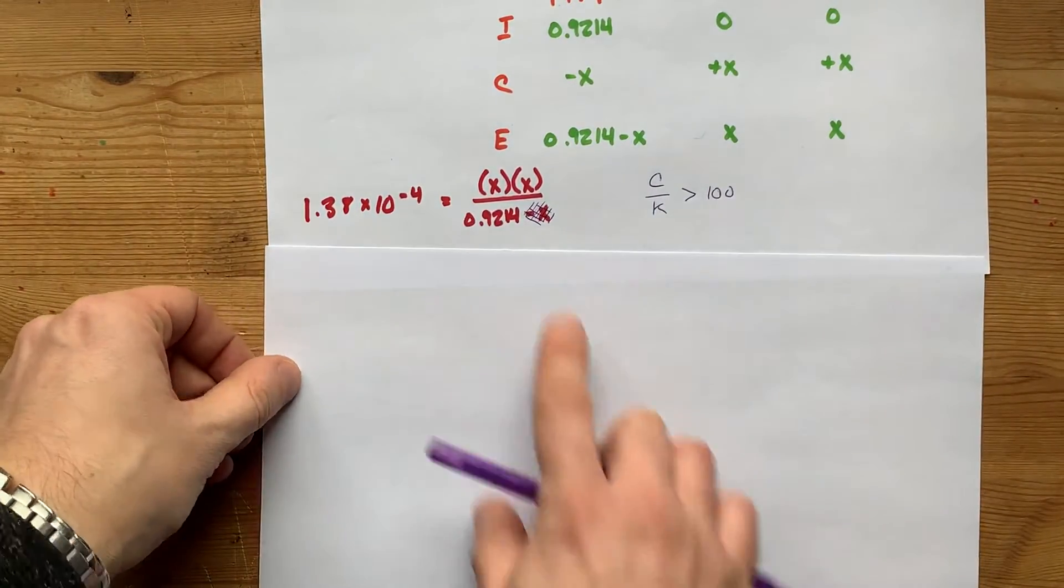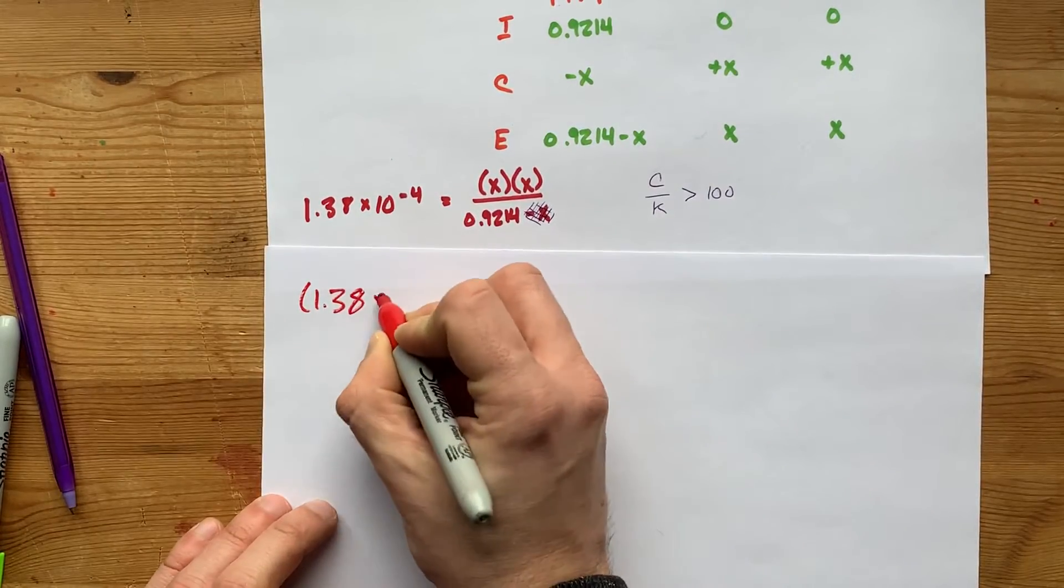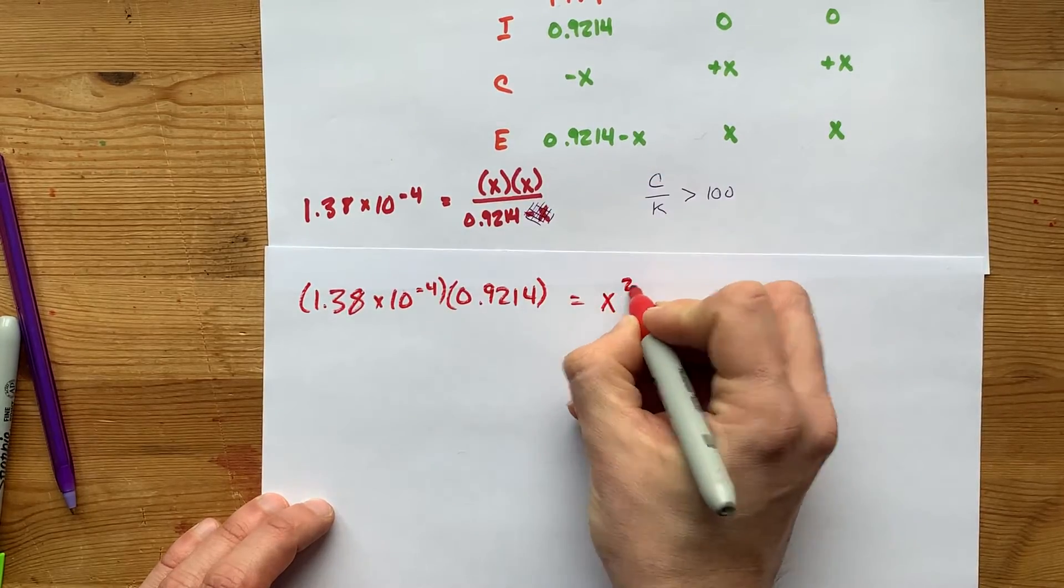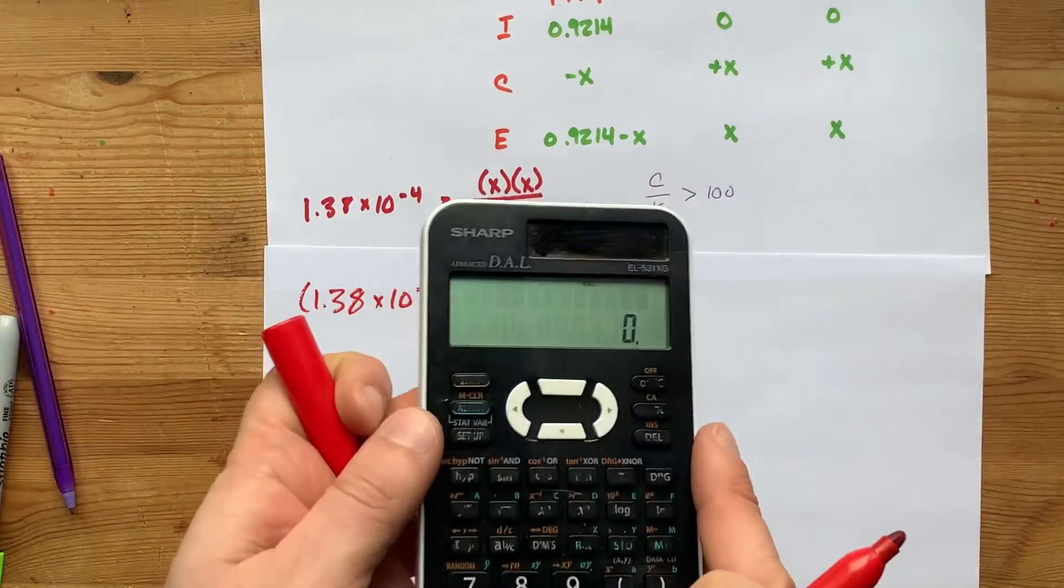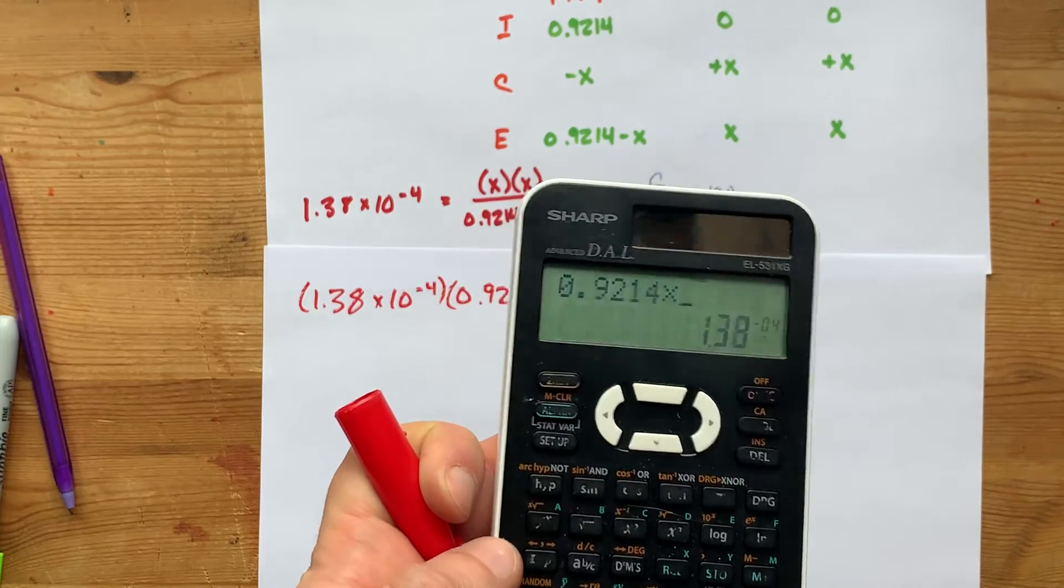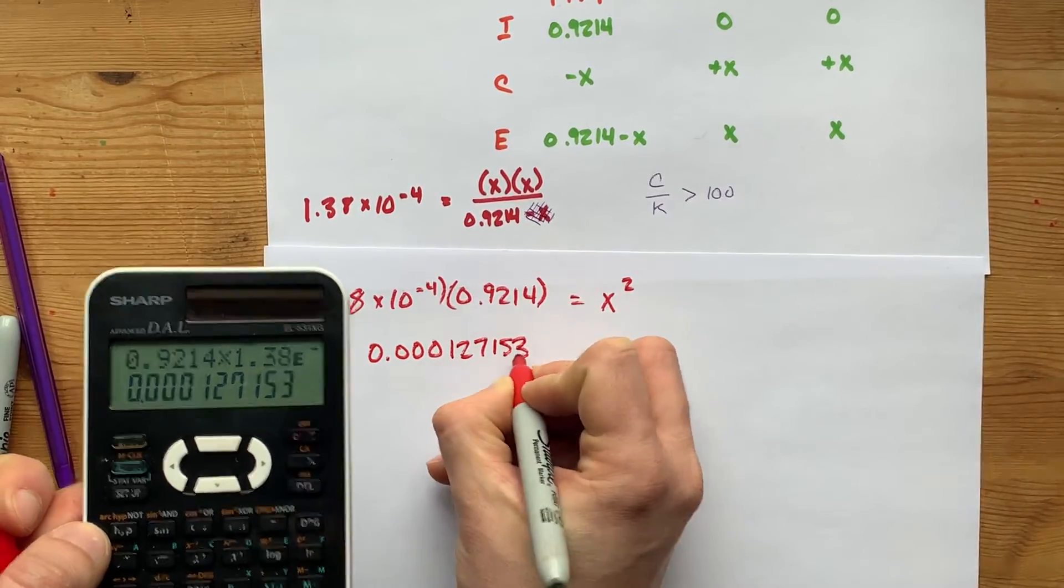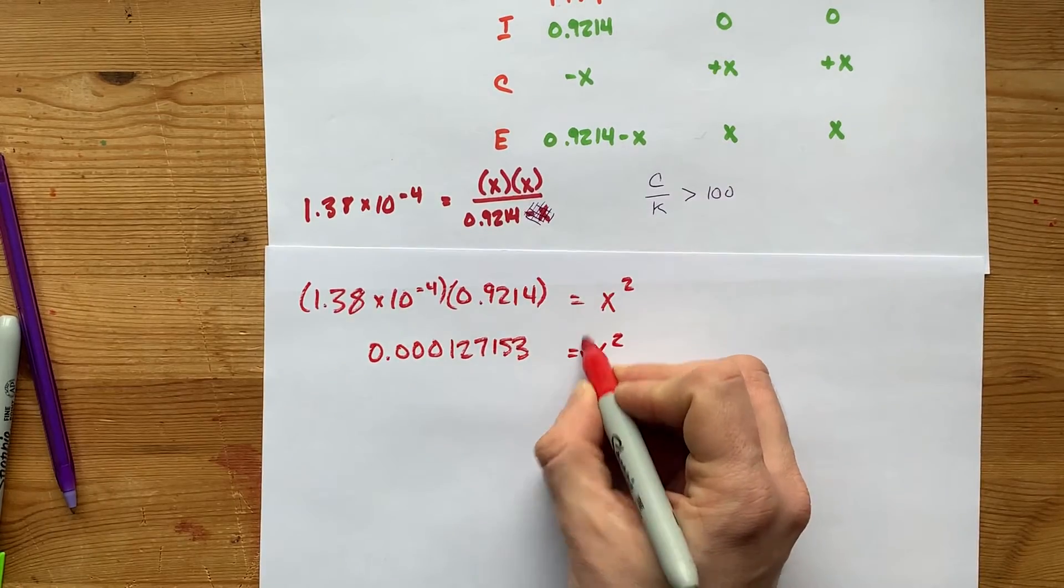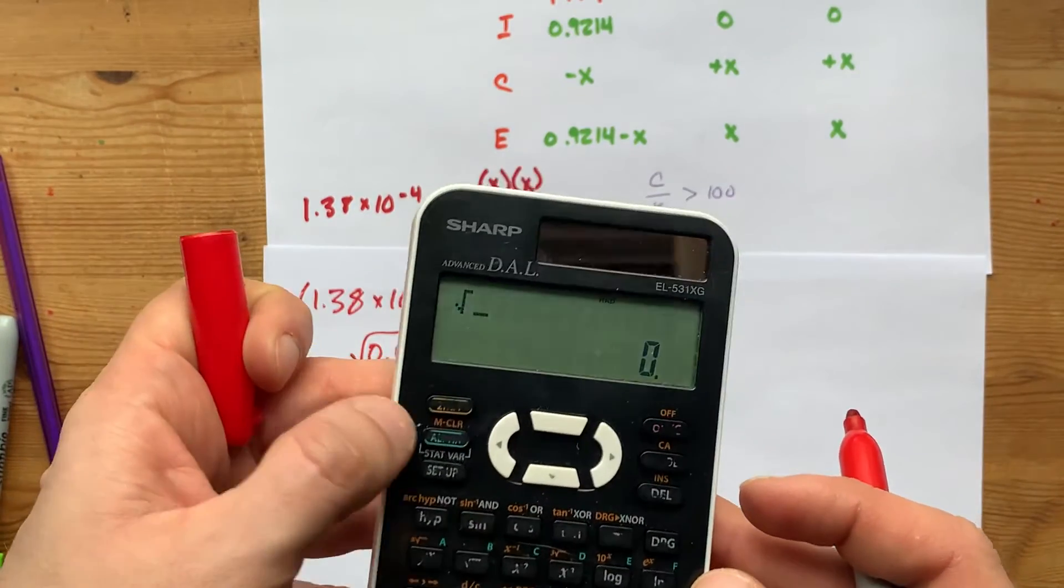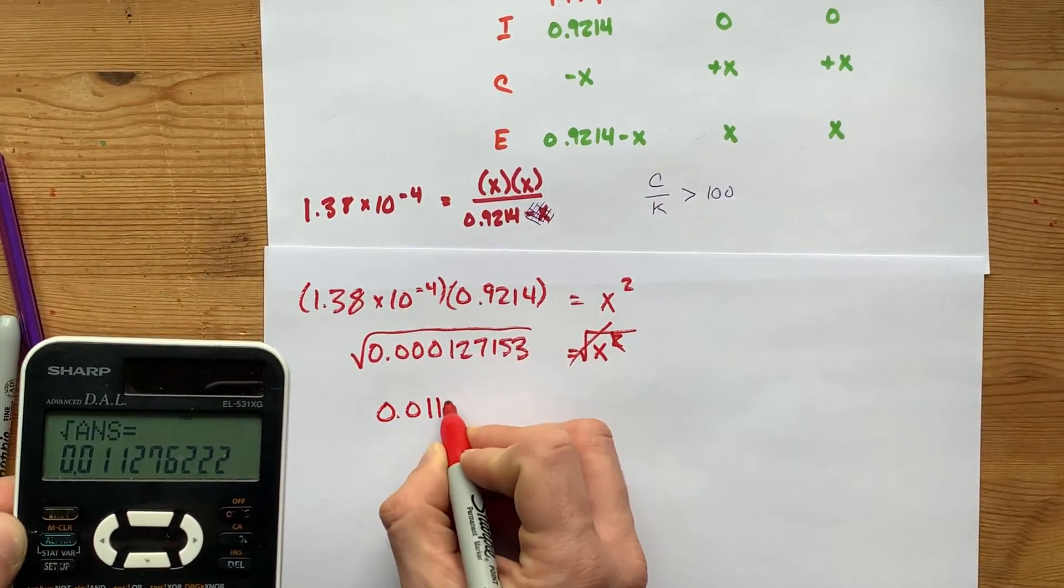It means you can simply undo this dividing by 0.9214 by multiplying it on the other side. 1.38 times 10 to the negative 4 times 0.9214 equals, the top here is still X squared. I'm going to do that on the calculator, 0.9214 times 1.38 times 10 to the power of negative 4. I got 0.1230s, then a 127153. To actually solve for X, I'm going to square root both sides. Square root and square cancel each other out. Here's my square root button, square root of the previous answer. I get 0.011276.